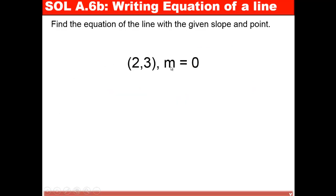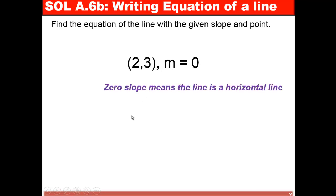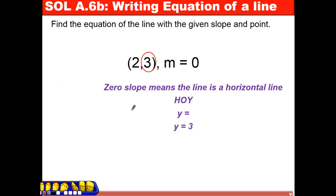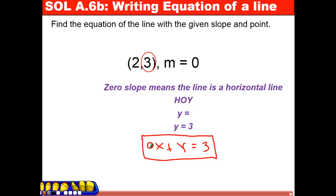If the slope is given to be 0 and I have a point passing through (2, 3), slope 0 means a horizontal line. The equation will be y equals the y-value of the point, which is y equals 3. In standard form, this is 0x plus 1y equals 3. So a equals 0, b equals 1, and c equals 3.